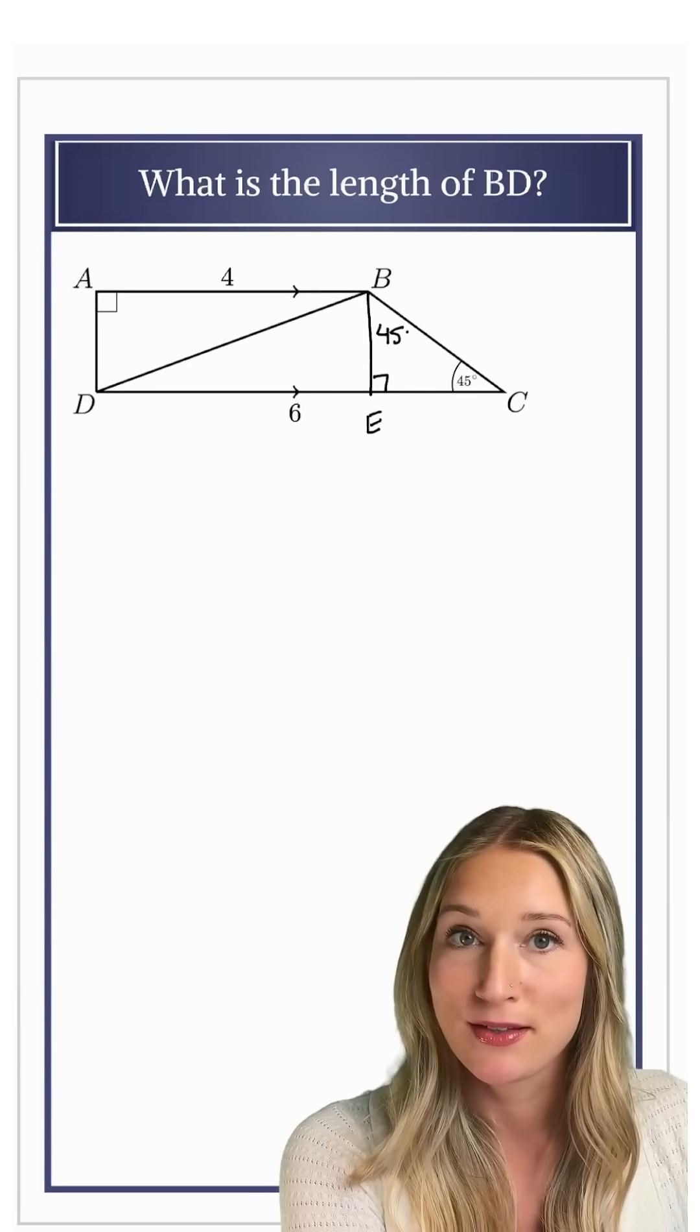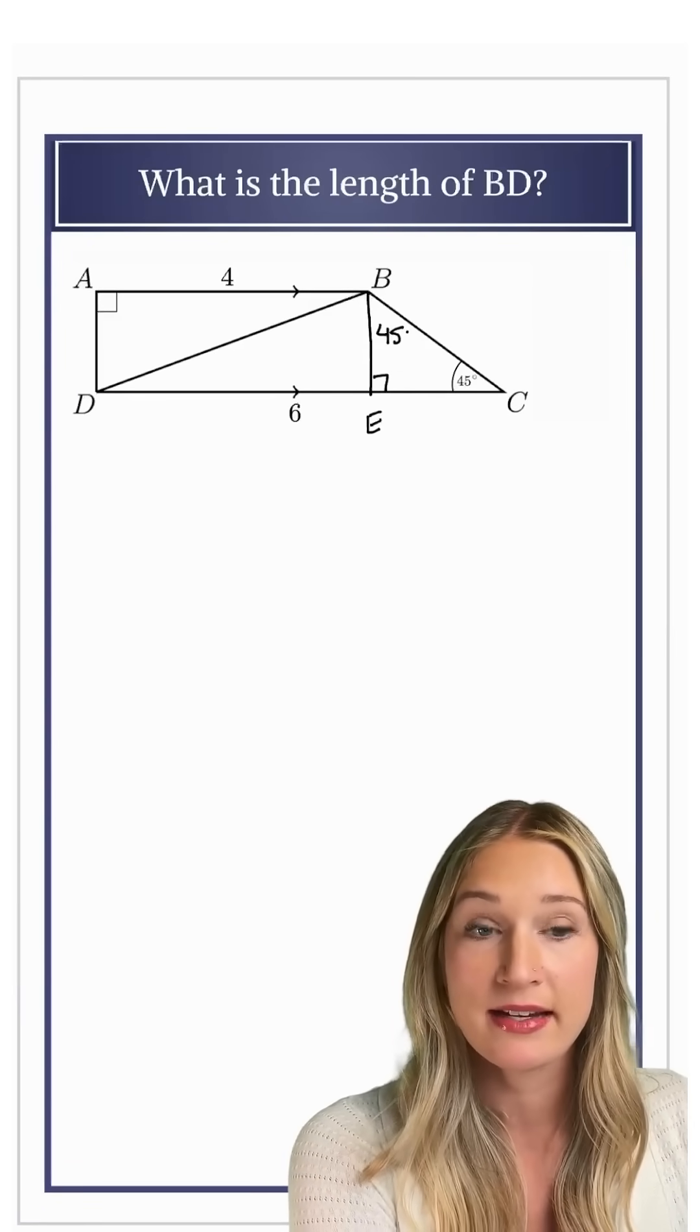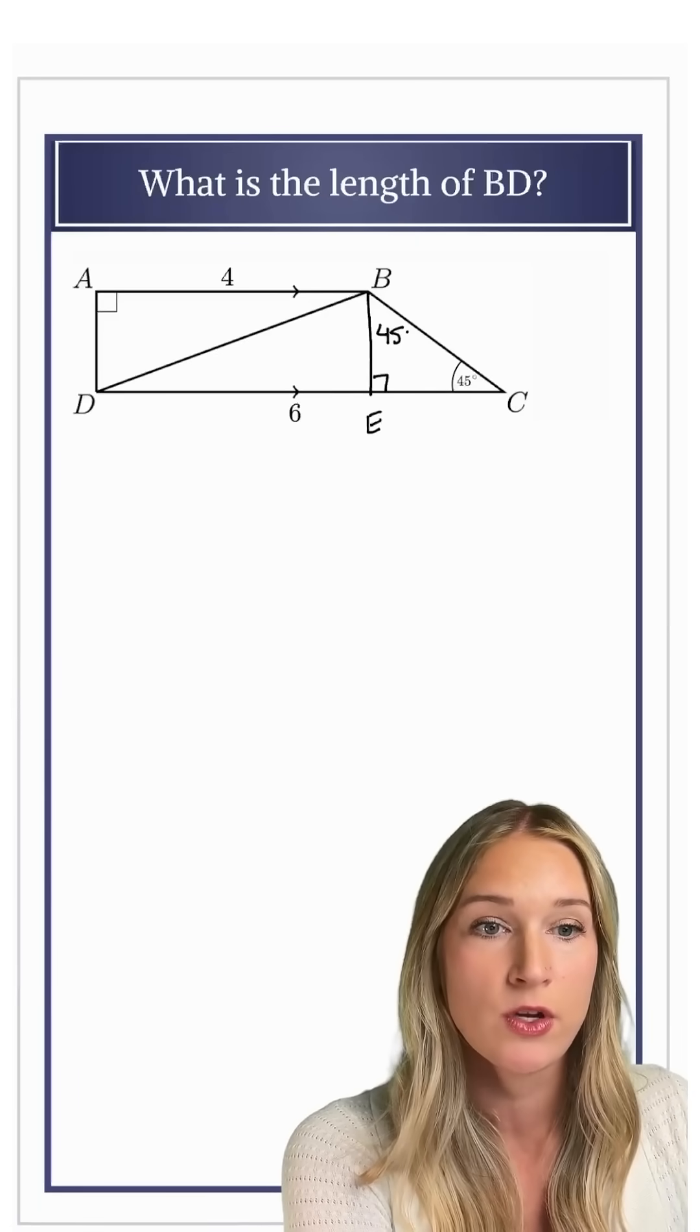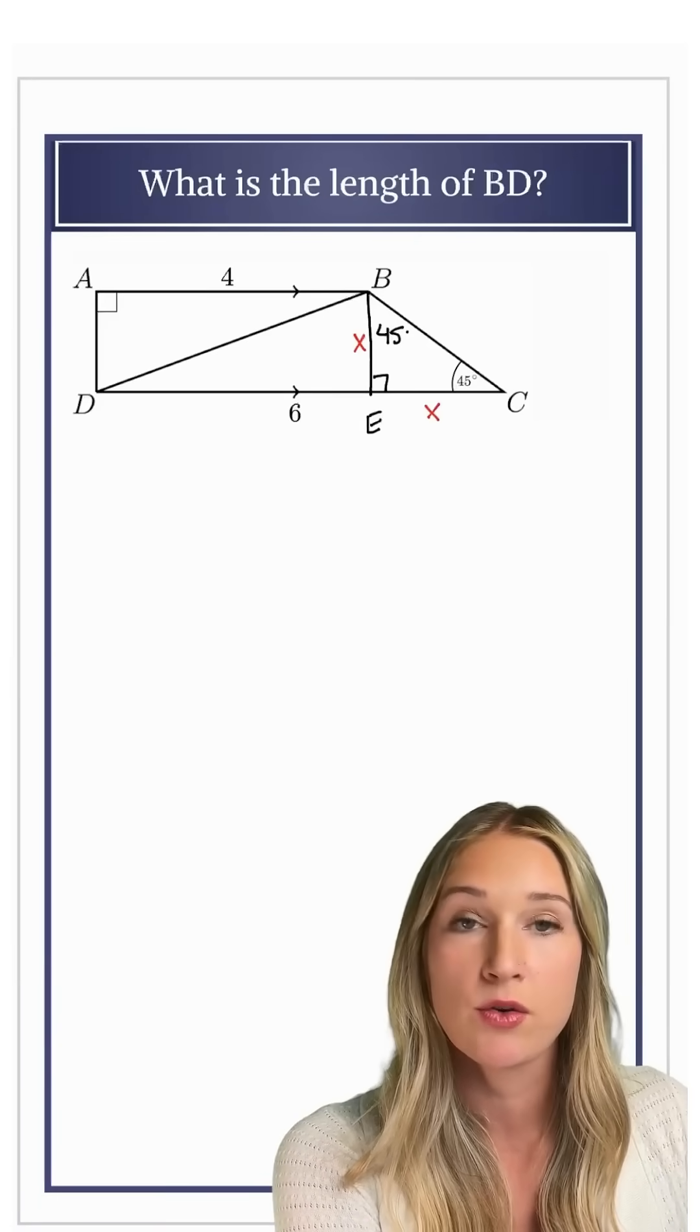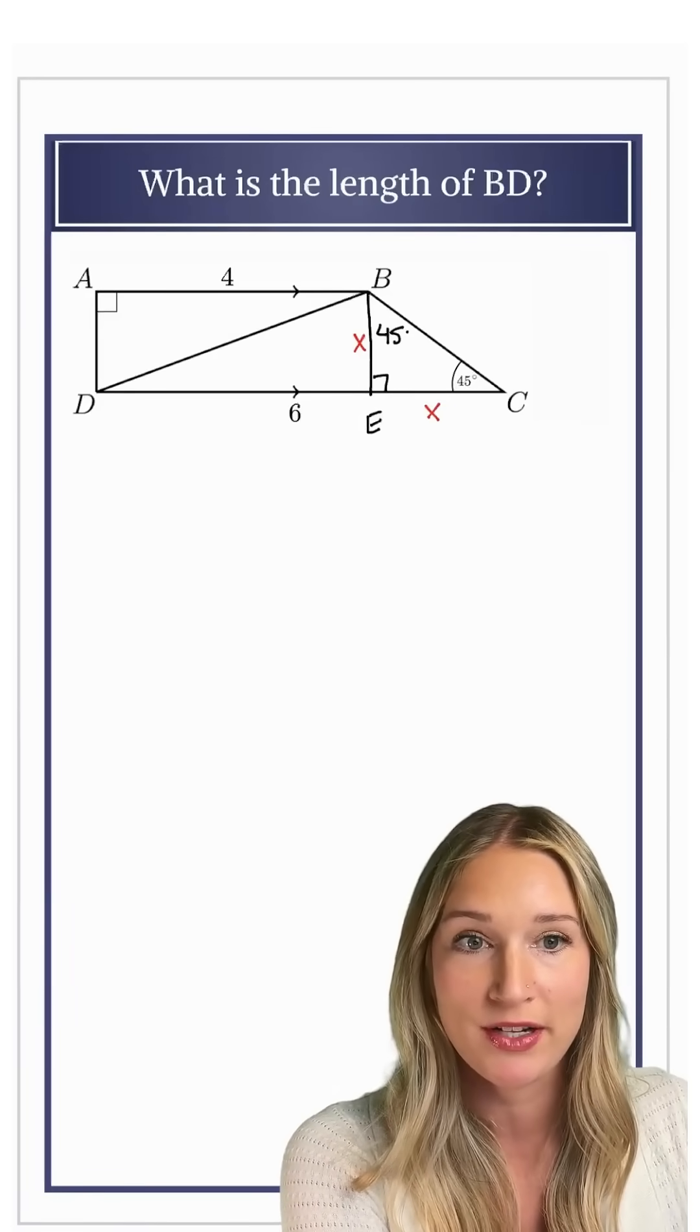So something that's a little bit helpful here is that it is an isosceles right triangle. So the height and the base of this triangle will also be congruent to one another.